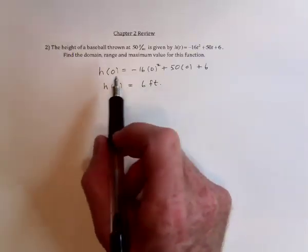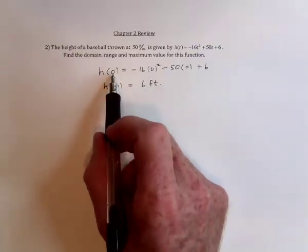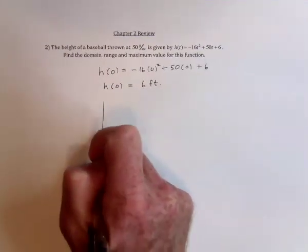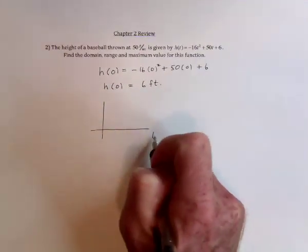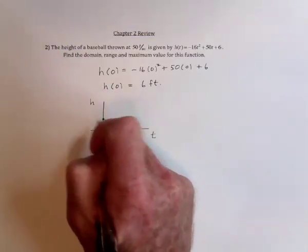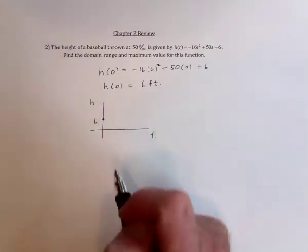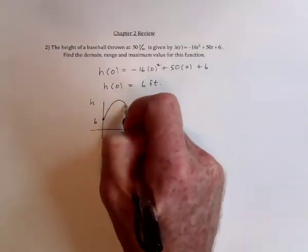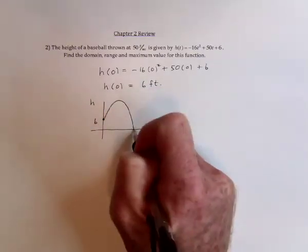That's when the domain starts. So it starts at zero and then we can look at it graphically as well. If this is the time and this is the height, at time zero it's starting at a height of six feet. The baseball is going to go up into the air and eventually it's going to come back down and hit the ground.